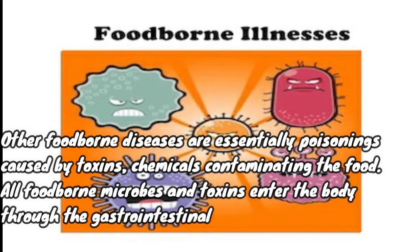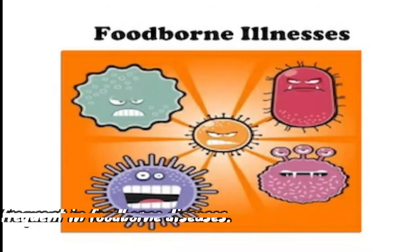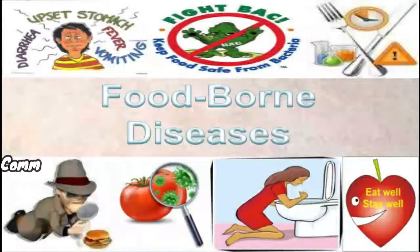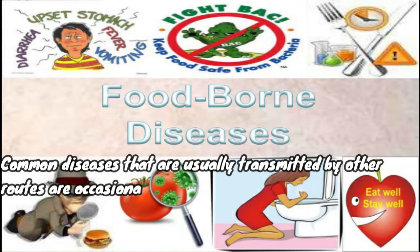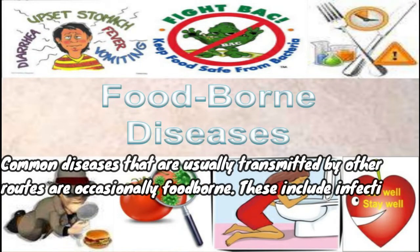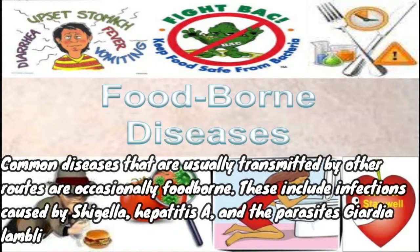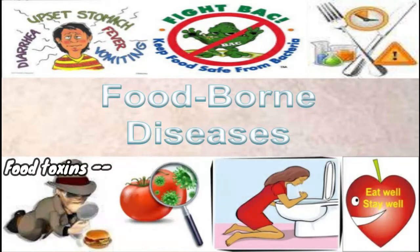All foodborne microbes and toxins enter the body through the gastrointestinal tract and often cause the first symptoms there. Nausea, vomiting, abdominal cramps, and diarrhea are frequent in foodborne diseases. Common diseases that are usually transmitted by other routes are occasionally foodborne, including infections caused by Shigella, Hepatitis A, and the parasites Giardia lamblia and Cryptosporidiae.